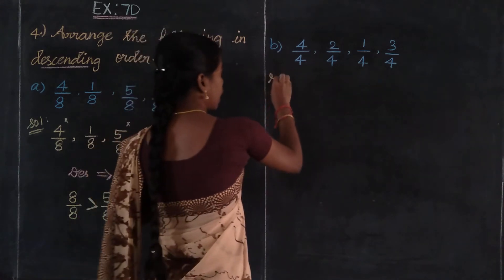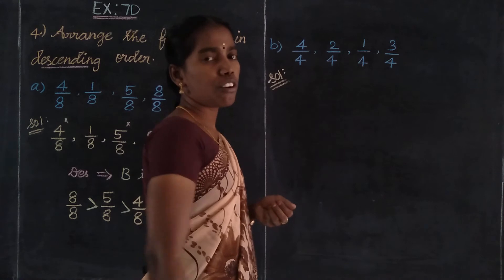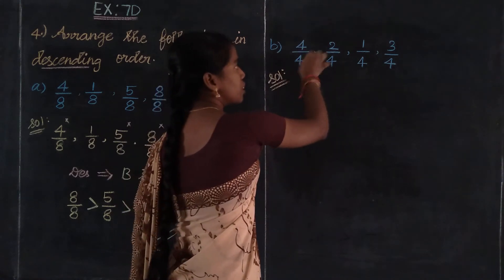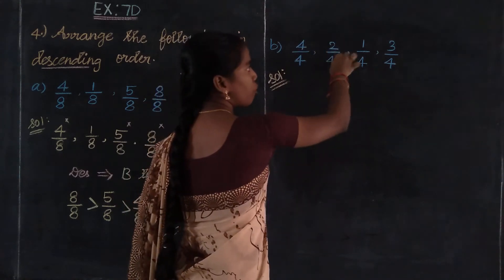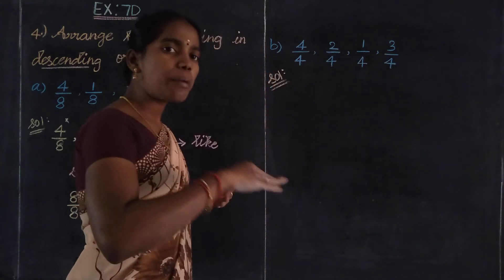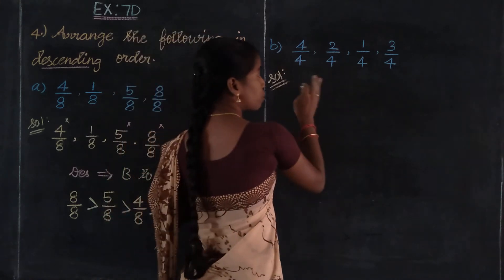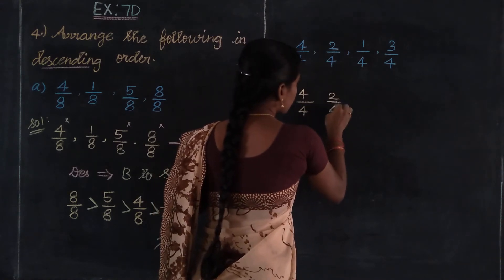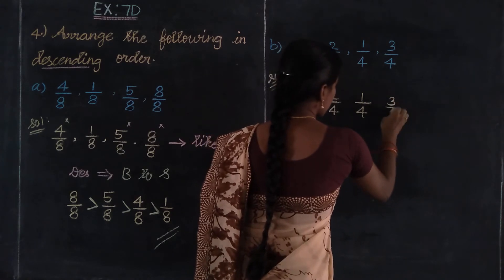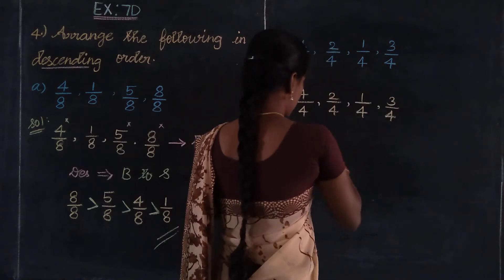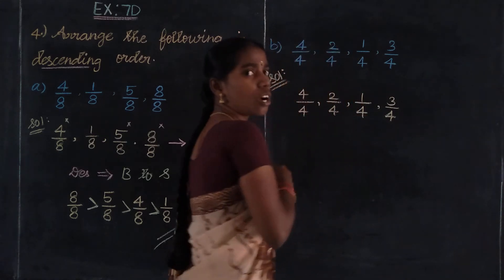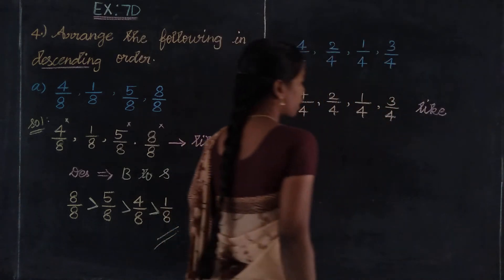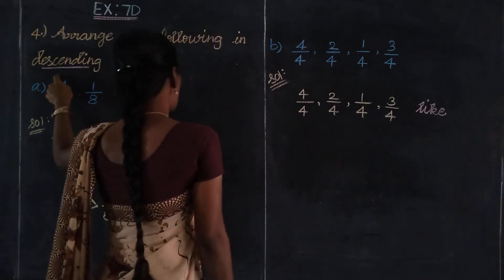Is it like or unlike? All 4 fractions always have equal denominator values — it's a like fraction. Then: 4 divided by 4, 2 divided by 4, 1 by 4, and 3 by 4. These are like fractions. Then how to arrange the descending order? In descending order, biggest value to smallest value. Since denominator is equal, we consider numerator.